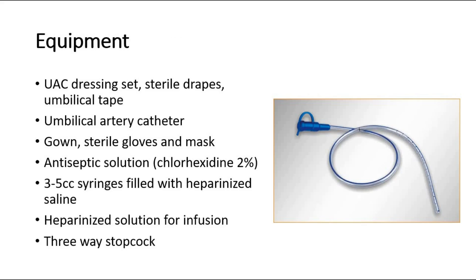The equipment needed for the procedure includes an umbilical arterial catheter dressing set, sterile drapes, umbilical tape. This picture shows an umbilical artery catheter. We also need a gown, sterile gloves and mask, antiseptic solution such as chlorhexidine 2% — but use diluted chlorhexidine 1-in-200 in preterm babies — 3-5cc syringes filled with heparinized saline, heparinized solution for infusion, and a three-way stopcock.